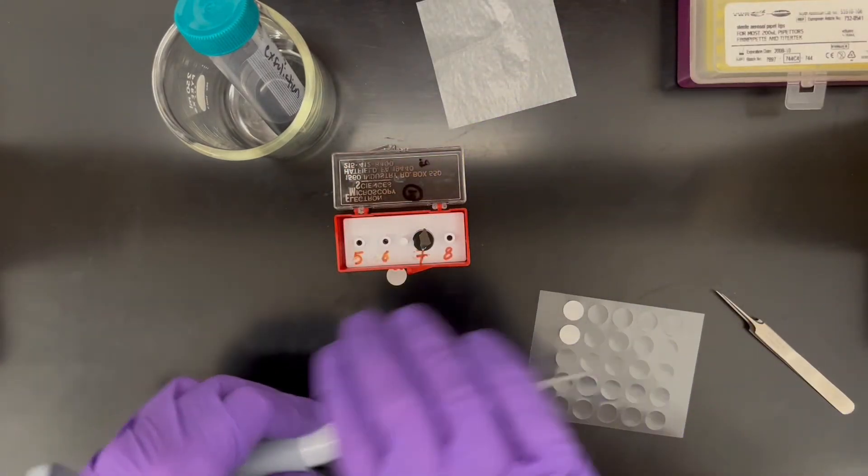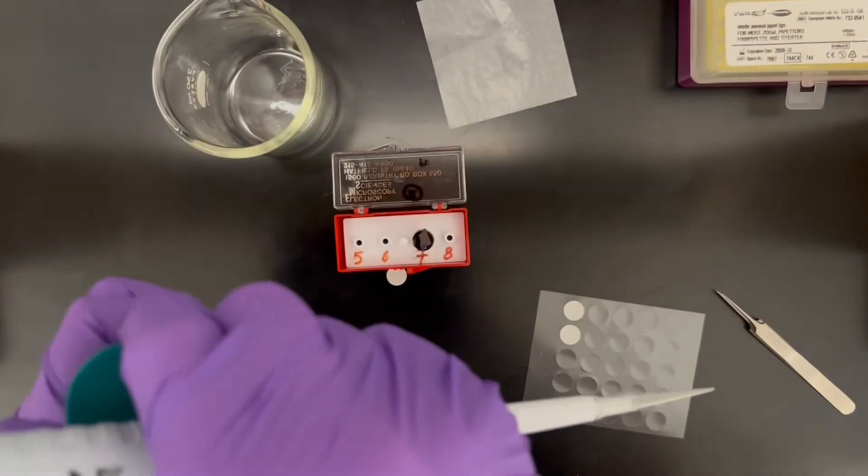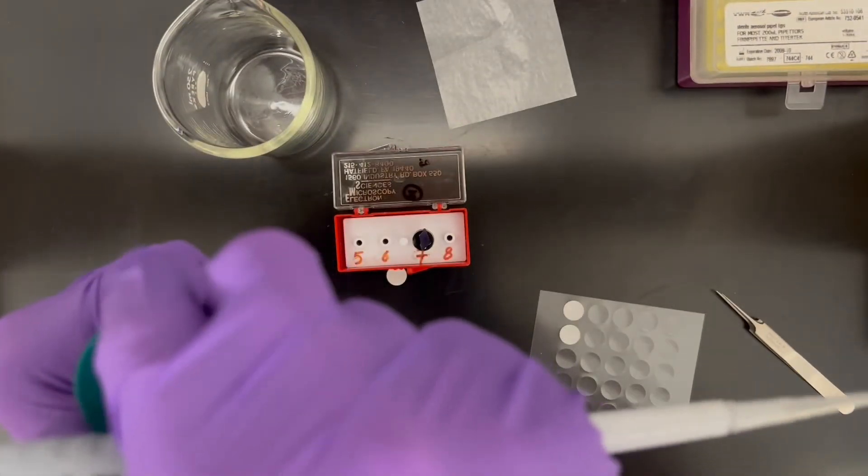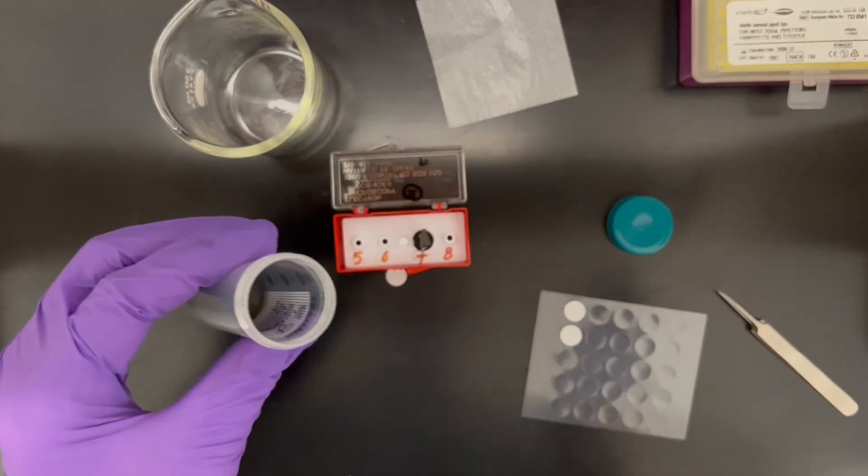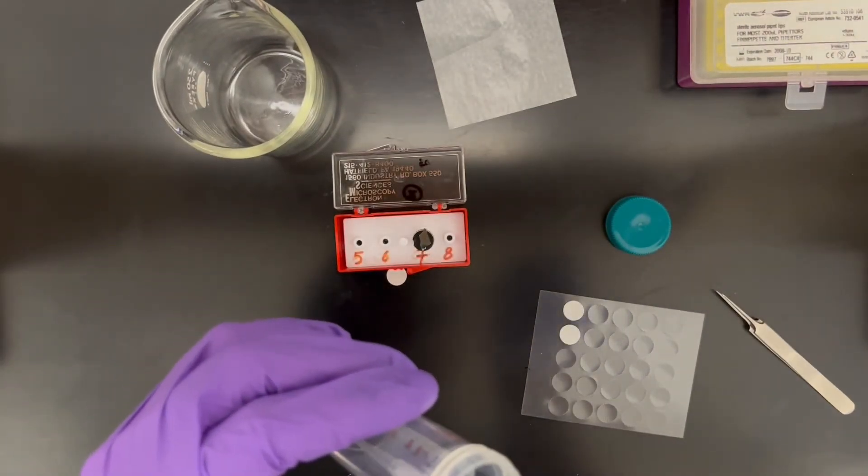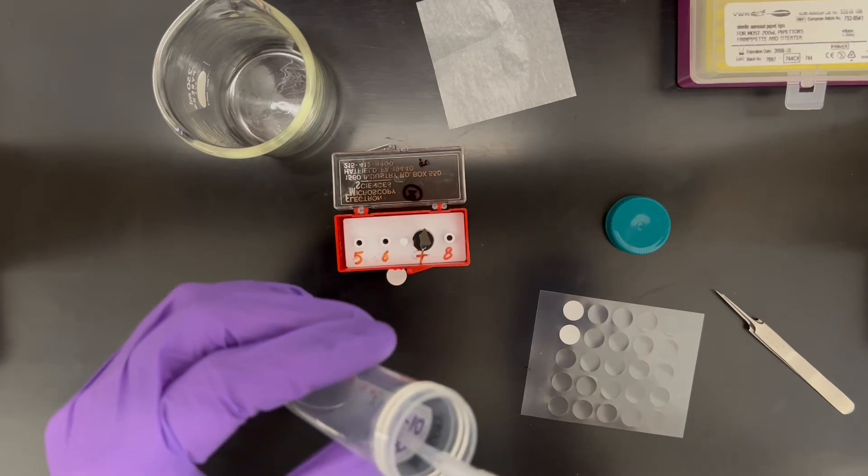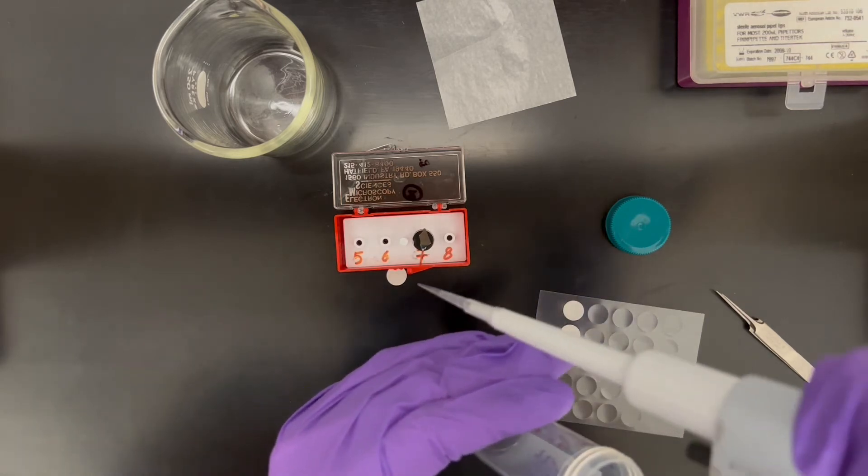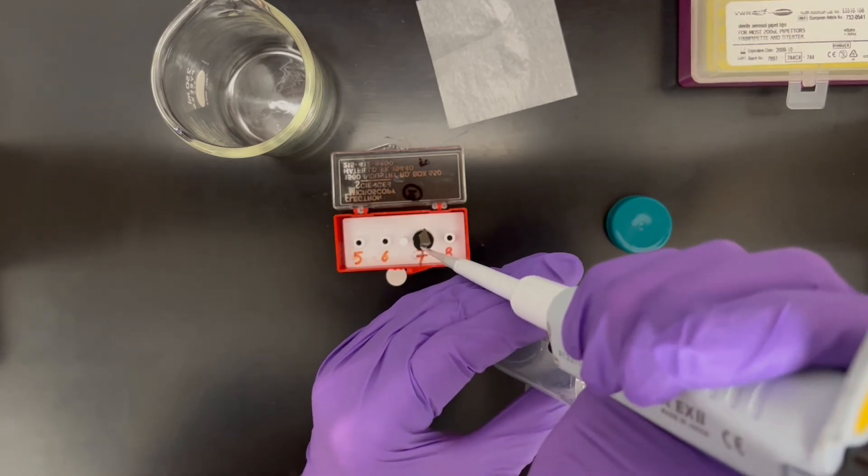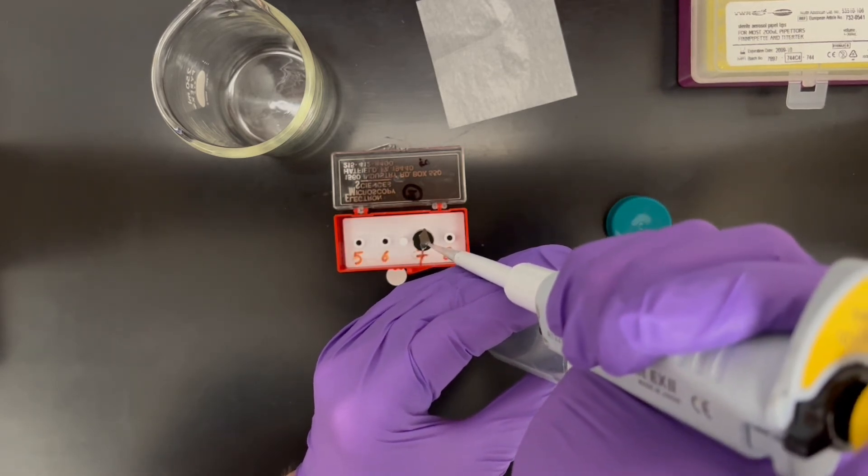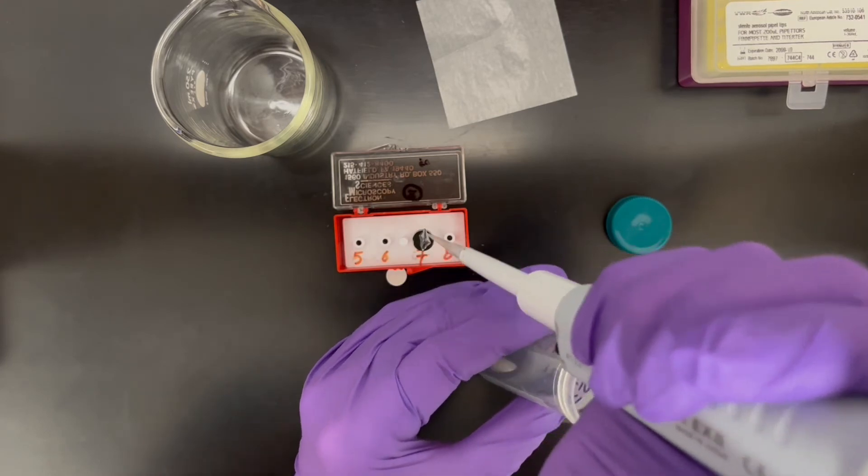Get your pipette, take your sample, and then pipetting from about the middle of whatever your liquid is, put it straight onto the silicon.